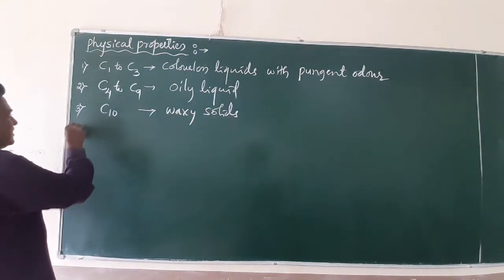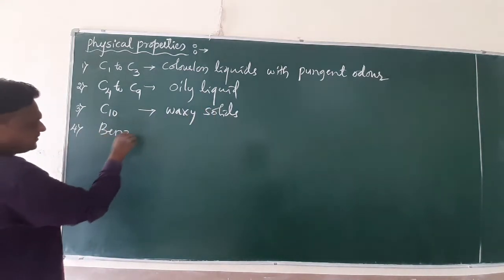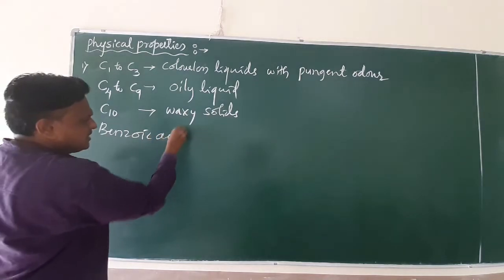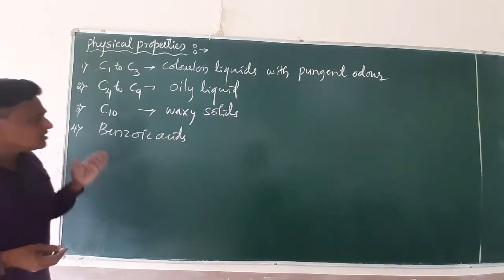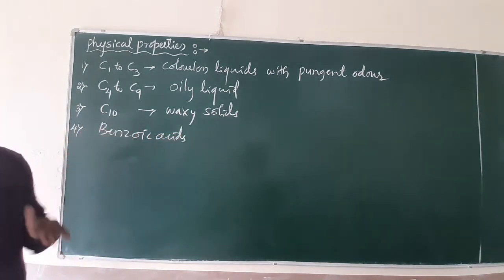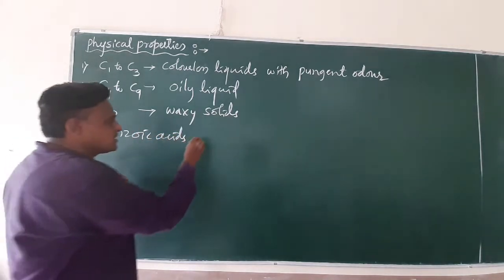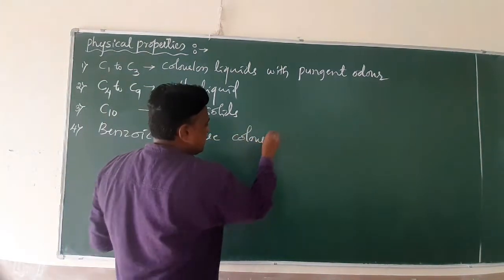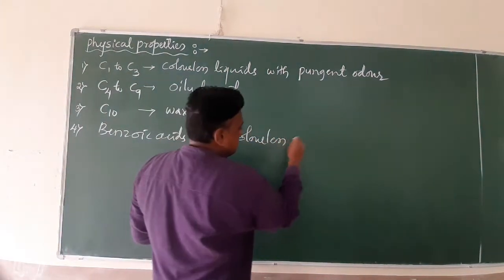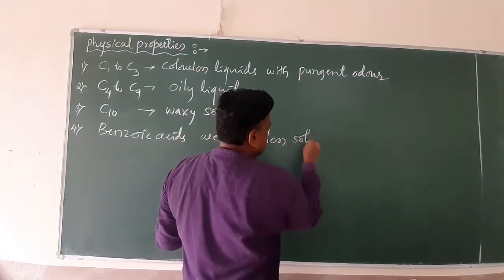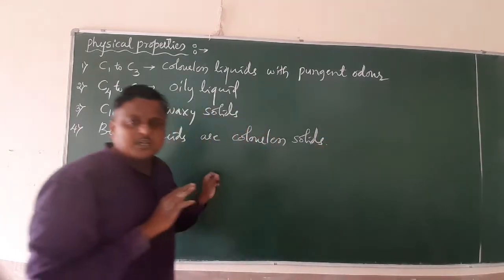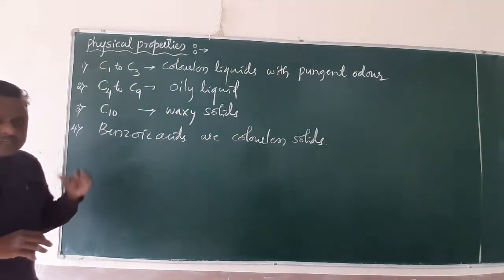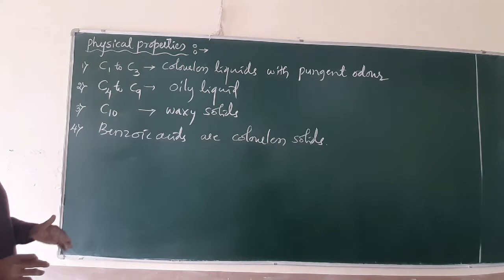A very important part: benzoic acid and their homologues — meaning the aromatic carboxylic acids — are colorless solids. This is the first physical concept of carboxylic acids, both aliphatic and aromatic.